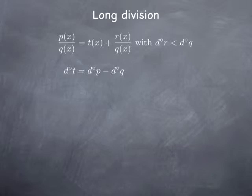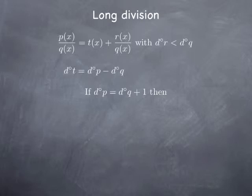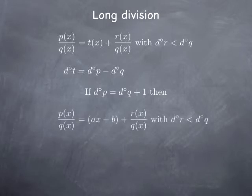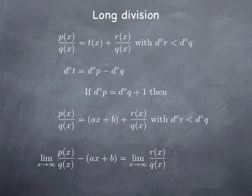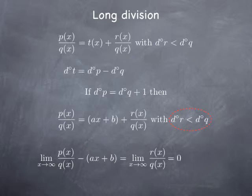We're interested in the case where t is in fact a linear function. That corresponds to the case where the degree of p, the degree of the top, is one more than the degree of q, one more than the degree of the bottom. Then the degree of t is going to be one — in other words, t is a linear function of the form ax plus b. Long division gives us p over q equals ax plus b plus r over q, where the degree of r is less than the degree of q. Looking at the limit of the difference between p/q and ax+b as x goes to infinity gives the limit of r over q. Since the degree of r is strictly less than the degree of q, this limit is zero.